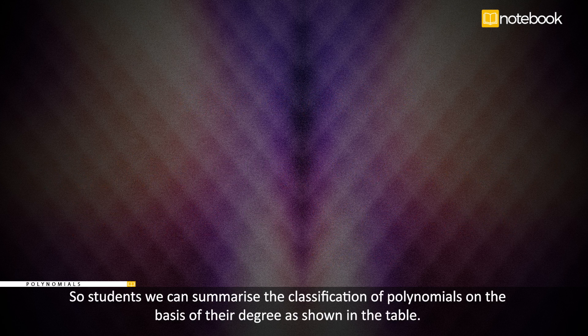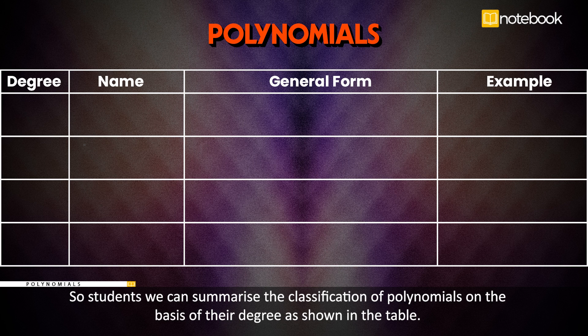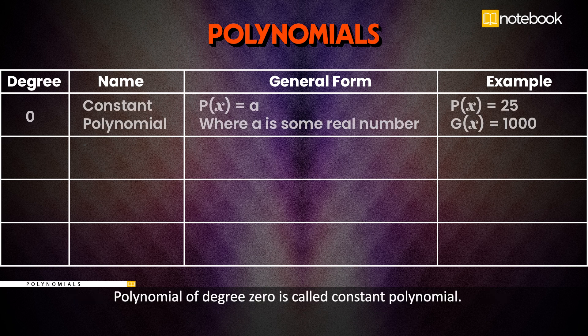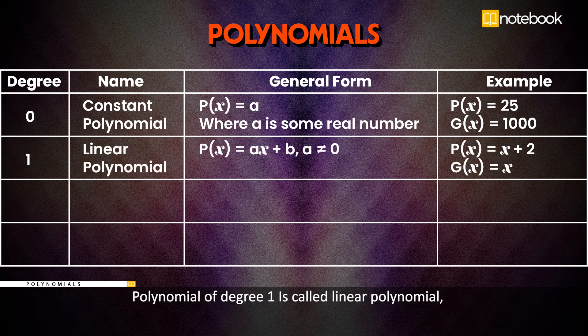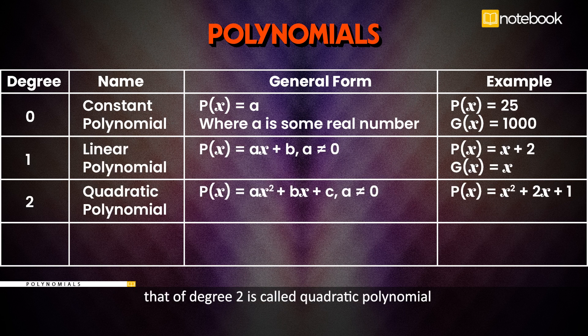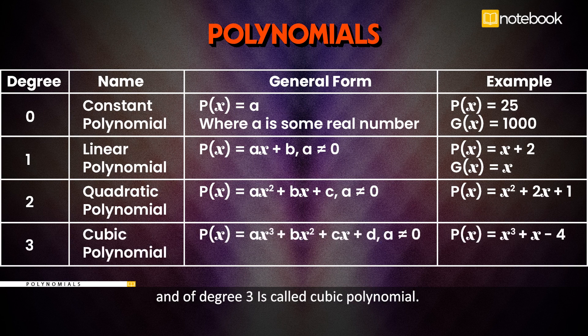So students, we can summarize the classification of polynomials on the basis of their degree as shown in the table. A polynomial of degree 0 is constant, degree 1 is linear, degree 2 is quadratic, and degree 3 is cubic.